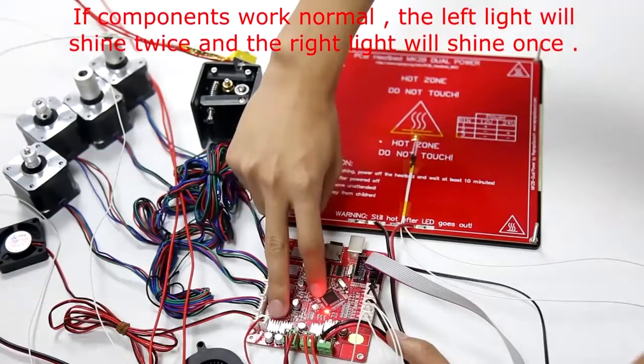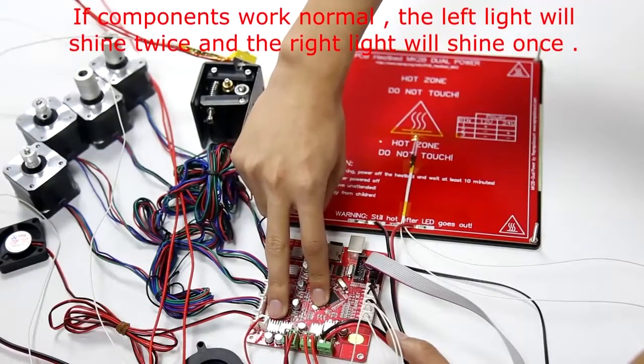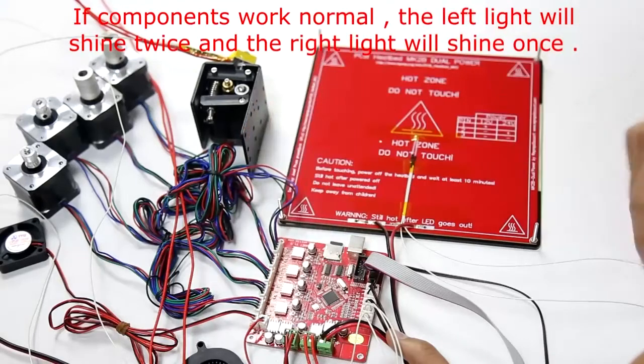If components work normally, the left light will shine twice and the right light will shine once.